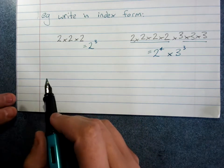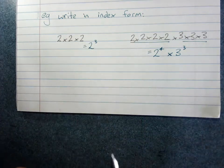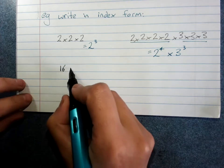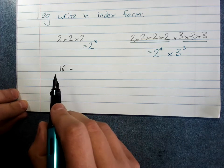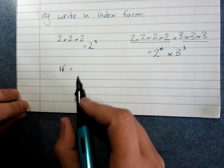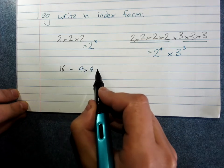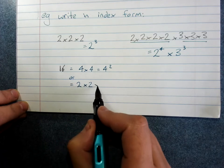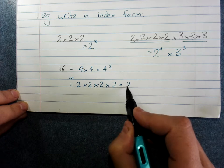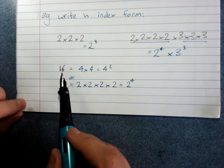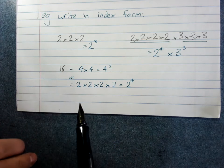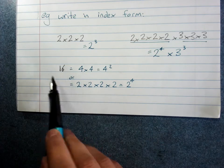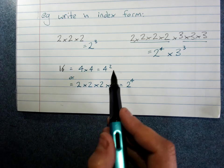We might also be given a tricky one, like: write 16 in index form. That means we have to look at ways of writing 16 as a number multiplied by itself. That could be 4 times 4, which is 4 squared, or it could be 2 times 2 times 2 times 2, which is 2 to the power of 4. So there are two different options. Sometimes we'll be asked to write a square number in index form — you have to find the number you can multiply by itself to get that value, and write it as a power or index.